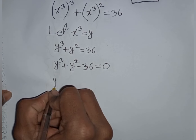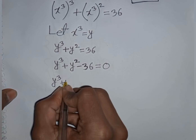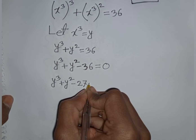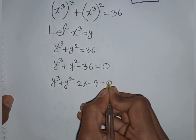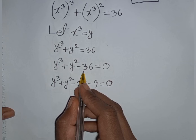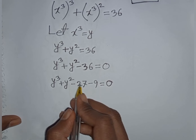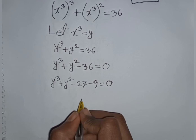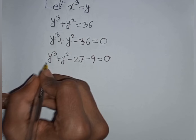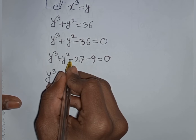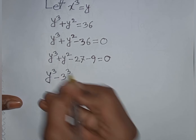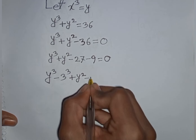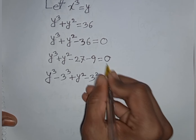We split −36 as −27 − 9, rewriting: y^3 − 27 + y^2 − 9 = 0, which is y^3 − 3^3 + y^2 − 3^2 = 0.